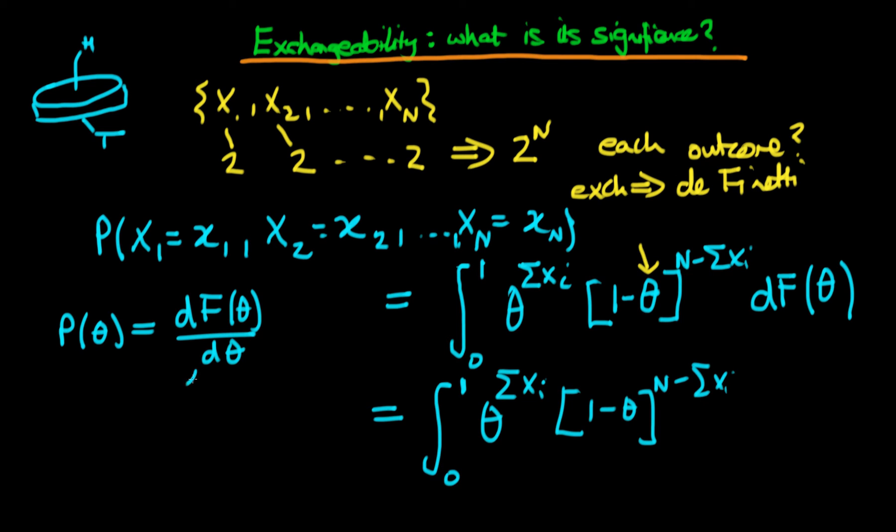And now all we do is multiply through by d theta here to get df, which we had before. Then we get something which is called p of theta times d theta. This now starts to look familiar to something we've seen before. This first part of the expression is just a likelihood. What's the second part here, this p of theta?